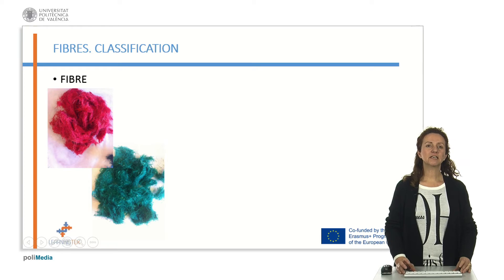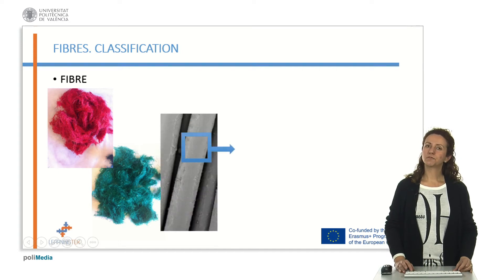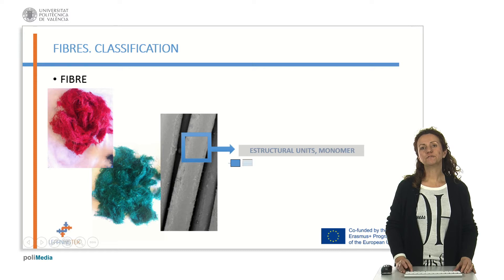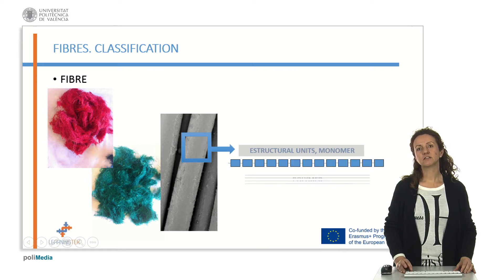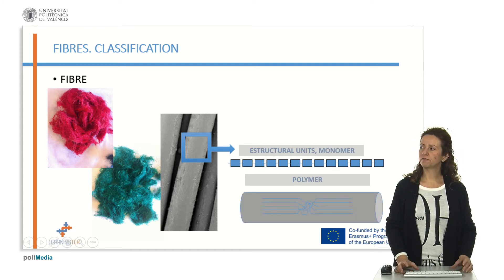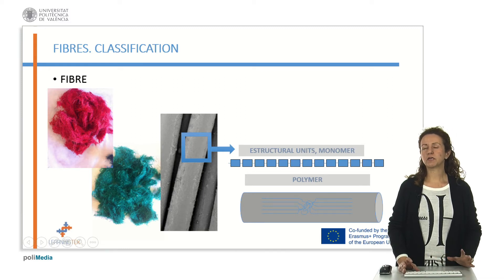Textile materials are based on fibres and fibres are made of some units which are called monomers. Those monomers are arranged into different chains which are called polymers, and this polymer is organized inside the fibre both in ordered or disordered ways.